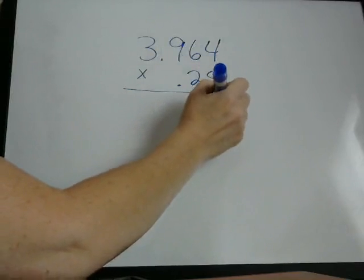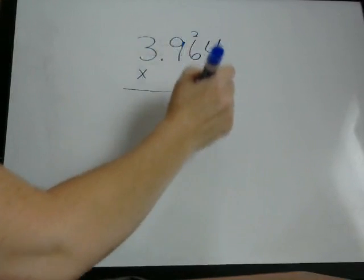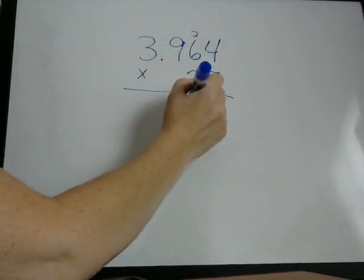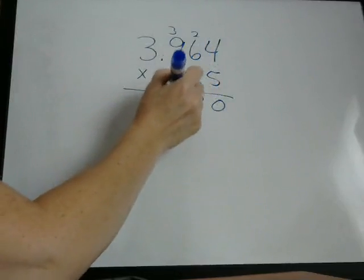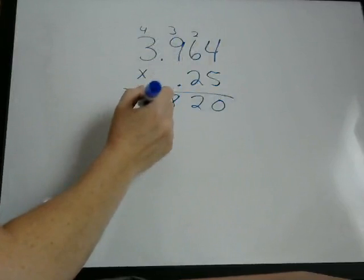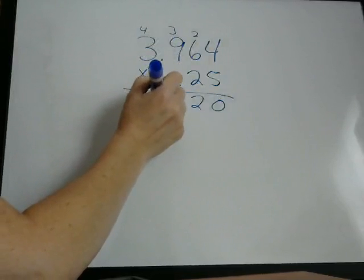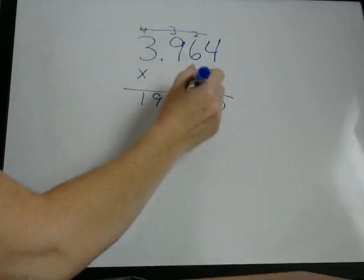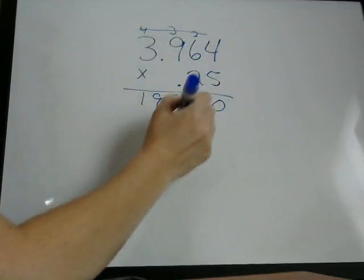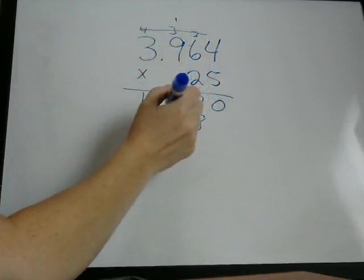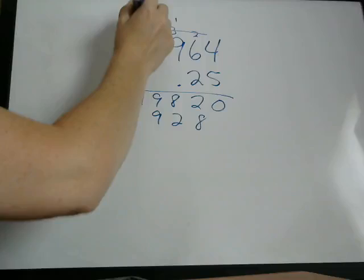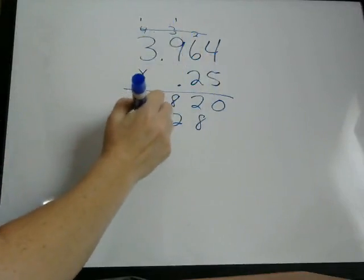5 times 4 is 20, carry the 2. 5 times 6 is 30, plus 2 is 32. 5 times 9 is 45, plus 3 is 48. 5 times 3 is 15, plus 4 is 19. 2 times 4 is 8, 2 times 6 is 12. 2 times 9 is 18, plus 1 is 19, and 2 times 3 is 6, plus 1 is 7.